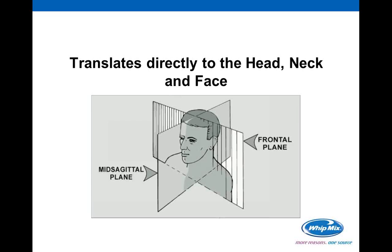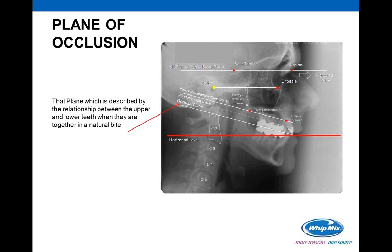Translating directly into the head and neck, we have the frontal plane once again, and also referenced is the mid-sagittal plane, which is the same as the medial or median plane. We also often talk about the plane of occlusion, which is described as the relationship between the upper and lower teeth as they come together in a natural bite.